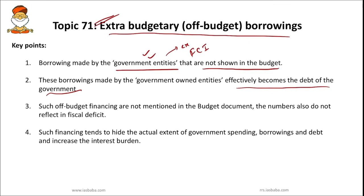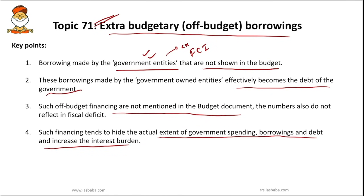Since such off-budget financing is not mentioned in the budget document, the exact numbers are not reflected in the fiscal deficit. Such financing tends to hide the actual extent of government spending, borrowings, and debt, and it increases the interest burden. Currently, extra budgetary resources are being used for the Food Corporation of India, Pradhan Mantri Awas Yojana — specifically the rural part — and a major chunk is going to the rural electrification program Ujwala. According to budget estimates 2021-22, extra budgetary resources stand at 2.9% of GDP.